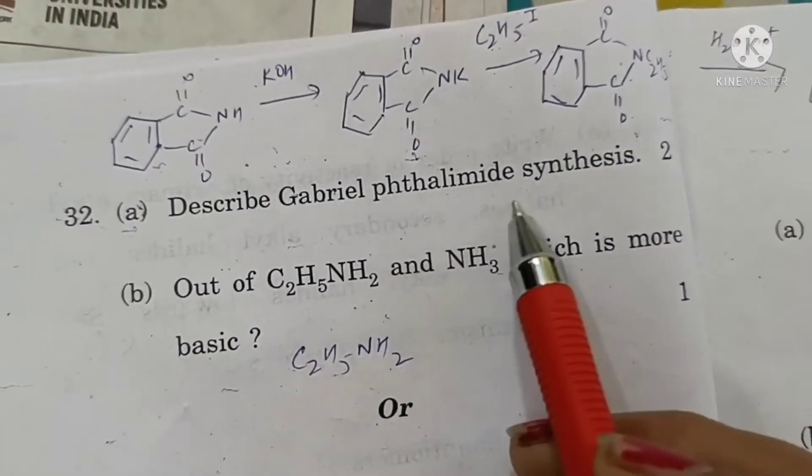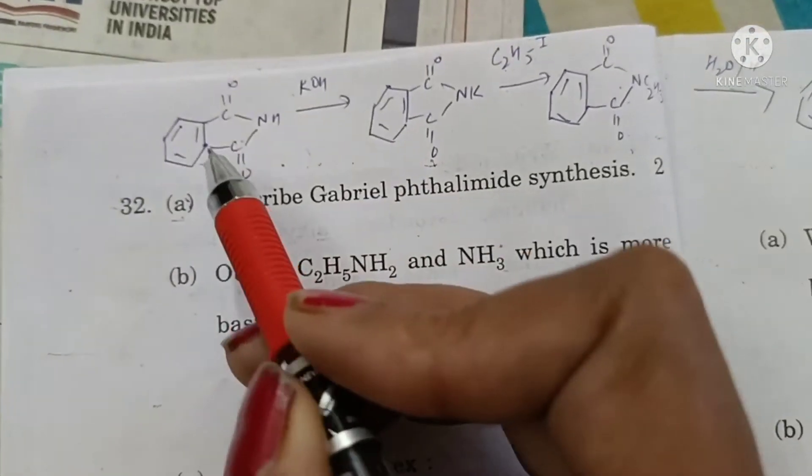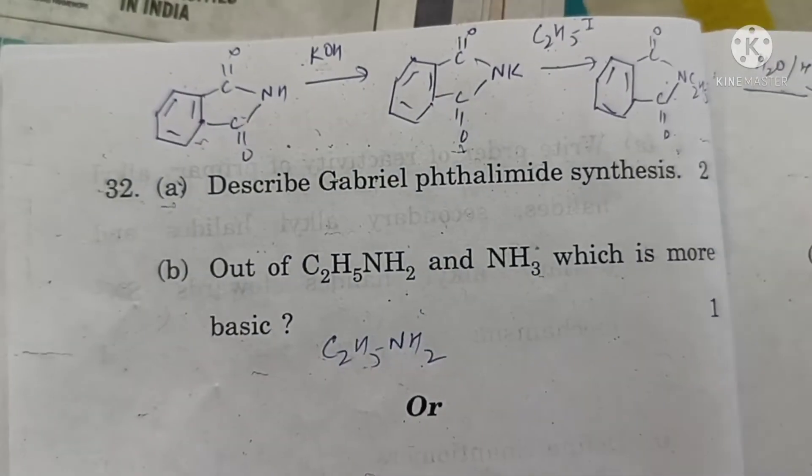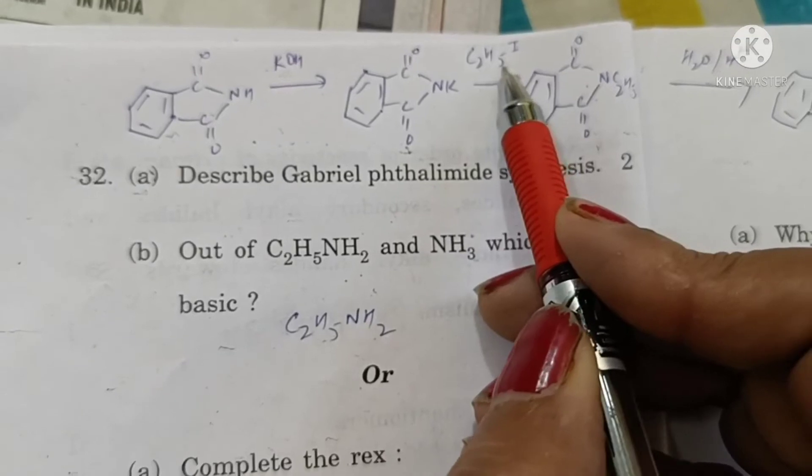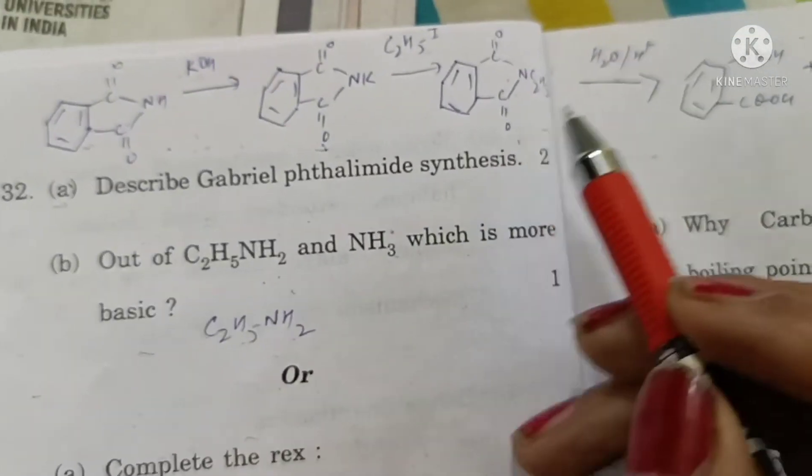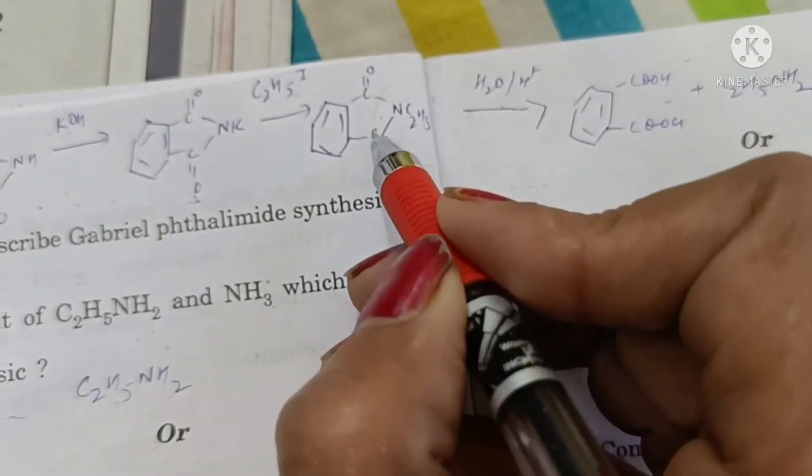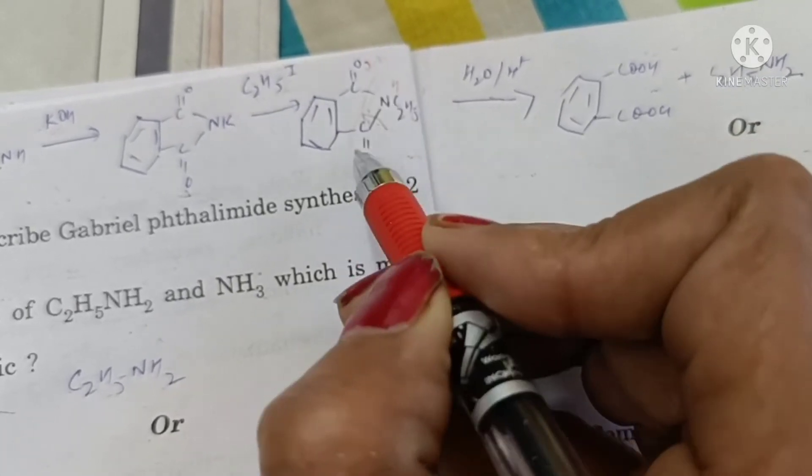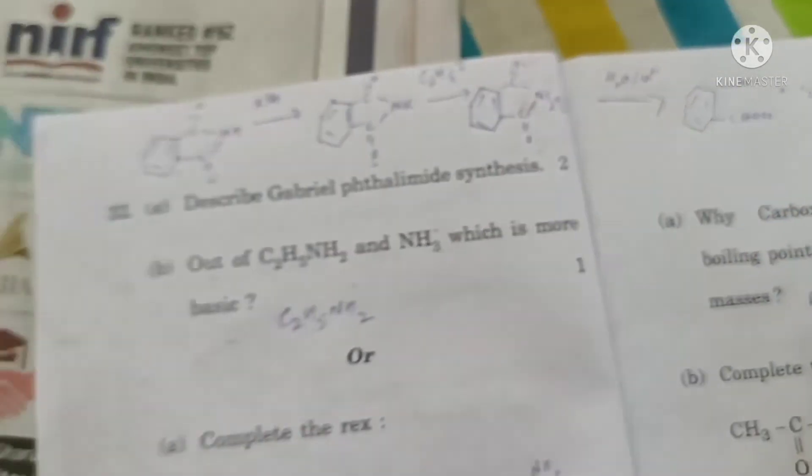Describe Gabriel phthalimide synthesis. This reaction is used for synthesis of primary amines. Phthalimide is reacted with alcoholic KOH to form potassium phthalimide which when reacted with alkyl halide will form N-alkyl phthalimide. This on acidic hydrolysis will break the bond from this and this region. Water breaks and adds OH here and H here. Phthalic acid is formed and primary amine. This is Gabriel phthalimide synthesis.